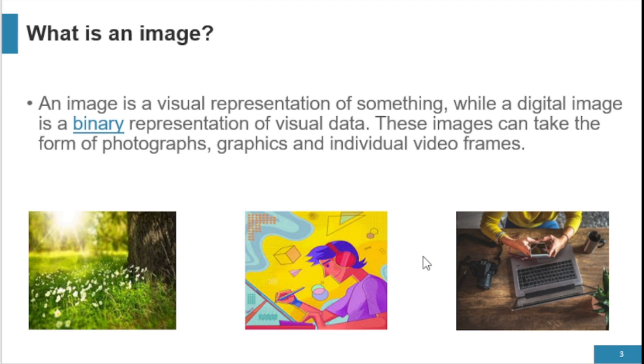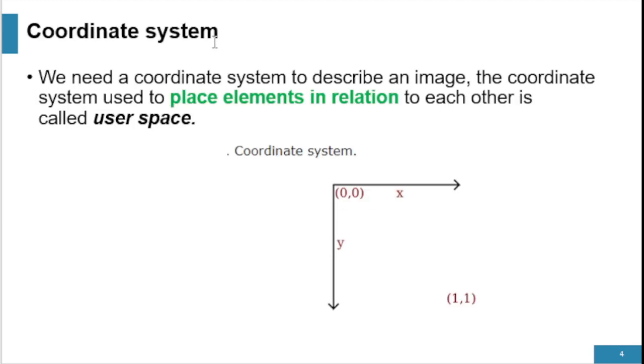We need a coordinate system to describe an image. Vector images use coordinate systems to show themselves. A coordinate system used to place elements in relation to each other is known as user space.